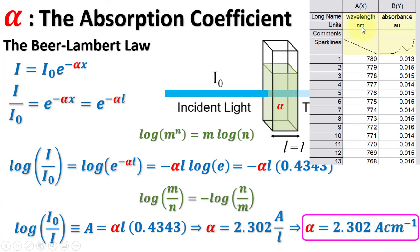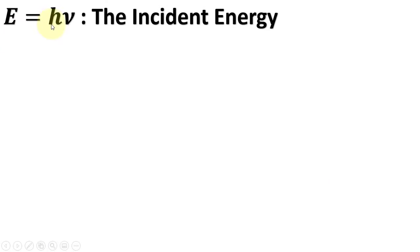Thus, from the UV-Vis absorption data, we will directly put the value of absorbance and alpha will be in the units of cm inverse. Now, here we will convert the incident energy values into some feasible units. As E equals h nu and nu equals c over lambda, putting the values.